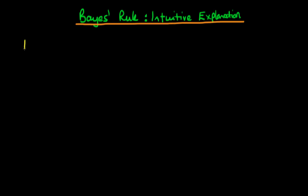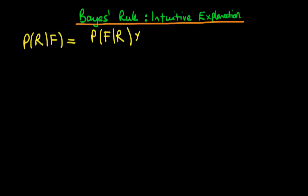Just to recap, Bayes' rule is, for example here, if we're talking about two events — the event that it rains and the probability that it is forecast that it will rain — then we can write down that the probability that it rains, given that it is forecast, is equal to the probability that it is forecast to rain, given that it actually does rain, times the probability that it will rain, divided through by the probability that it is forecast to rain.